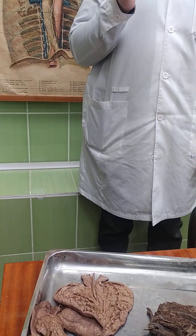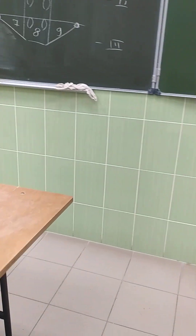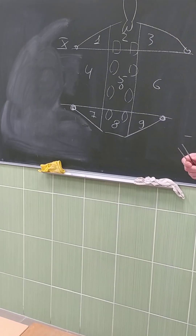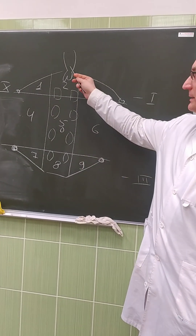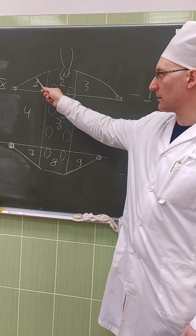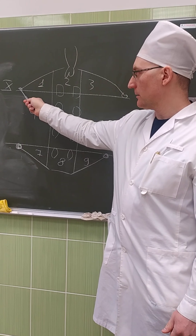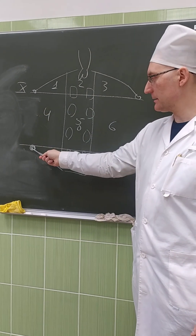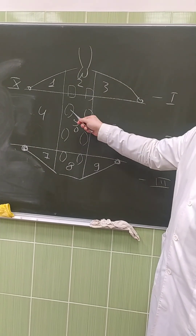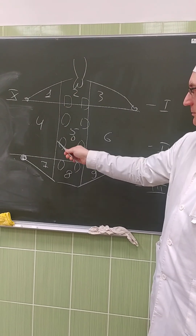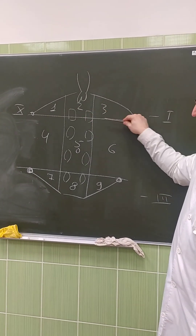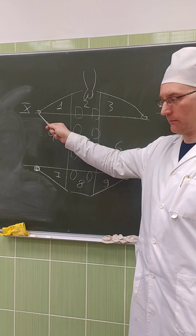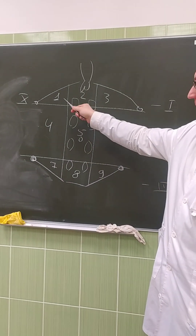Now we have skeletopy, syntopy, and next is holotopy. Holotopy refers to the holotopy of the anterior abdominal wall. This is the anterior abdominal wall: here is the sternum, cartilage of the ribs, cartilage of the tenth rib, spina iliaca anterior superior, and Musculus Rectus Abdominis. Two vertical lines on the border of Musculus Rectus Abdominis and two horizontal lines at the cartilage of the tenth rib and at the spina iliaca anterior give us nine regions.